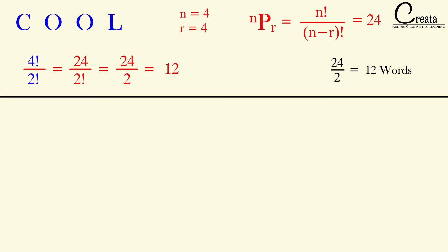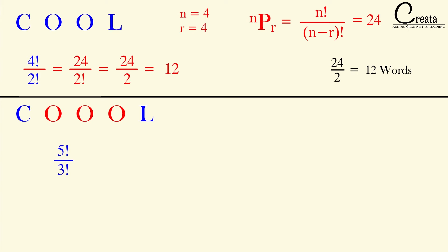For further clarity, let's take a new example. Now our word is COOOL, where O is repeating 3 times, and we have to form the different 5-letter words from these 5 letters. If we apply the traditional way, the answer will be 5 factorial. But here the letter O is repeating 3 times — O, O, and O — so our answer will be 5 factorial upon 3 factorial. We have divided by 3 factorial because O is repeating 3 times.